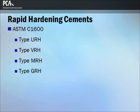Rapid hardening, high early strength hydraulic cement is used in construction applications such as fast track paving where fast strength development is required. They are classified according to ASTM C-1600 as Type URH (ultra rapid hardening), Type VRH (very rapid hardening), Type MRH (medium rapid hardening), and Type GRH (general rapid hardening).